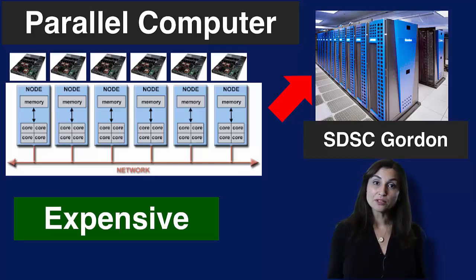Simply put, a parallel computer is a very large number of single computing nodes with specialized capabilities connected via the network. For example, the Gordon supercomputer here at the San Diego Supercomputer Center has 1024 compute nodes with 16 cores each, equaling 16,384 compute cores in total.